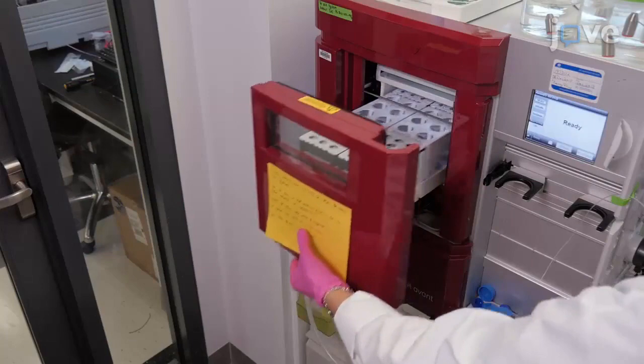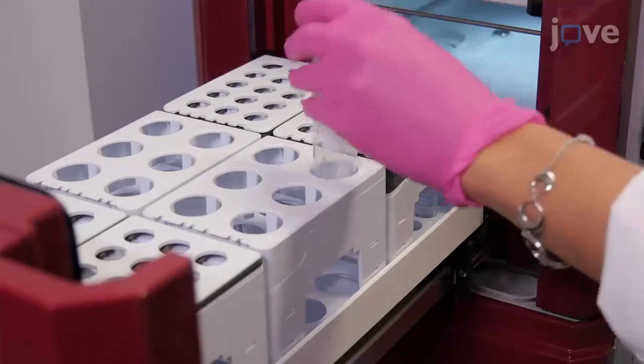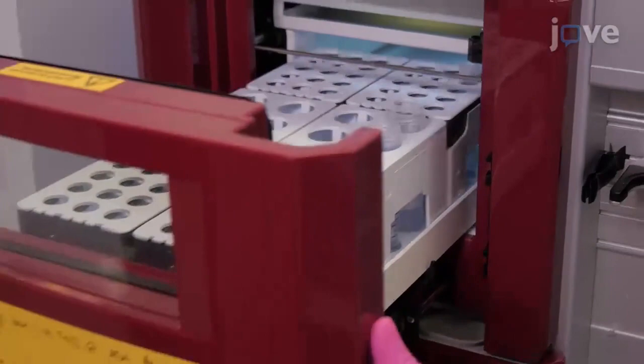Begin by opening the software attached to the purification system and placing 15 mL conical tubes to collect the purified antibody eluate and 50 mL conical tubes to collect the flow through during the high salt wash into the fraction collector.